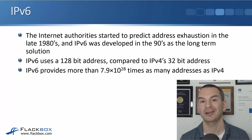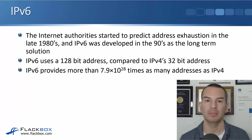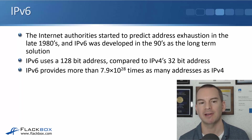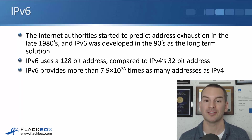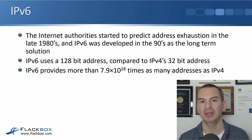The internet authorities started to predict address exhaustion in the late 1980s, and IPv6 was developed in the 90s as the long-term solution to this problem. IPv6 uses a 128-bit address compared to IPv4's 32-bit address. So the address is 4 times as long when you write it down, but it's not just a 4 times bigger address space. IPv6 actually provides more than 7.9 times 10 to the power of 28 times as many addresses as IPv4 — way, way more addresses than are available in IPv4 — and the idea is that the IPv6 address space will never run out.